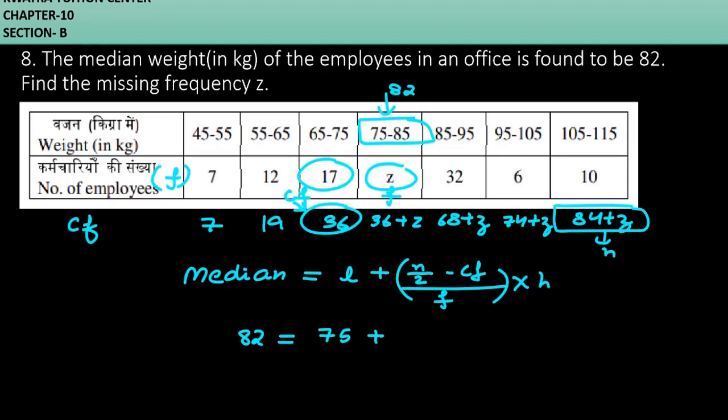n by 2 is 84 plus Z divided by 2, minus CF which is 36, over f which is Z, into h. h is the difference between lower limit and upper limit, which is 10.